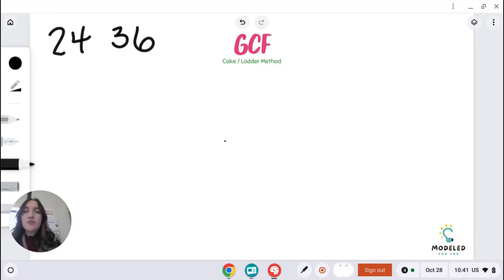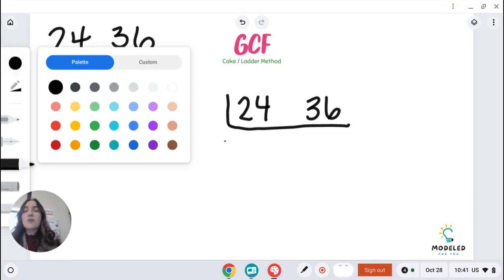So what you're going to do first is you're going to take your two numbers that you're given, and that's number 24 and 36 in this case, and you're going to put it in like a little cake. You'll see when I'm finished why this is called the cake or the ladder method.